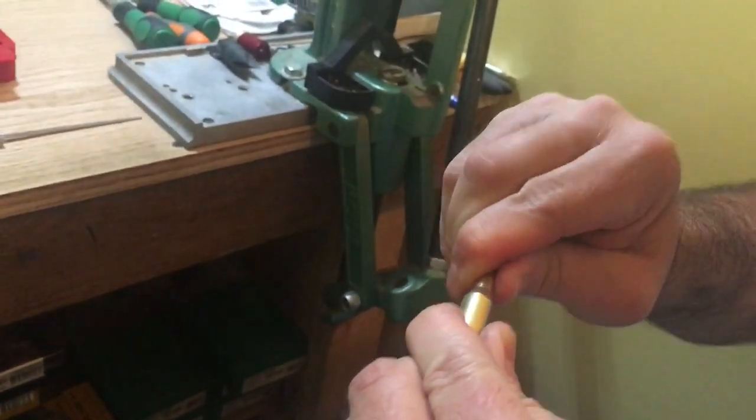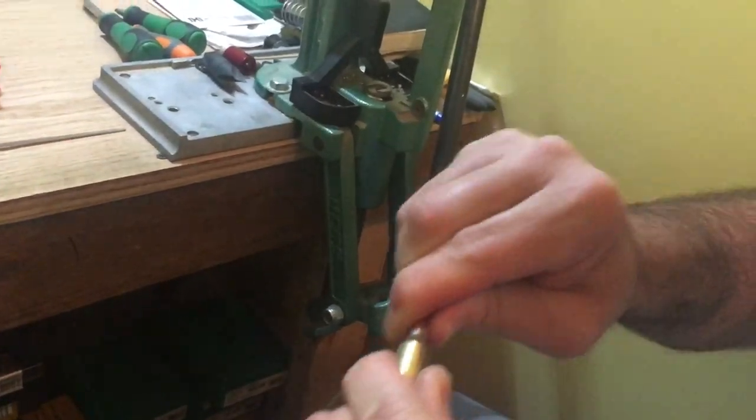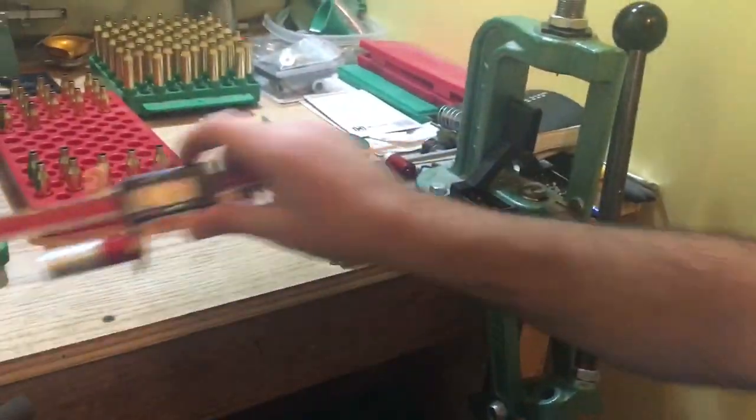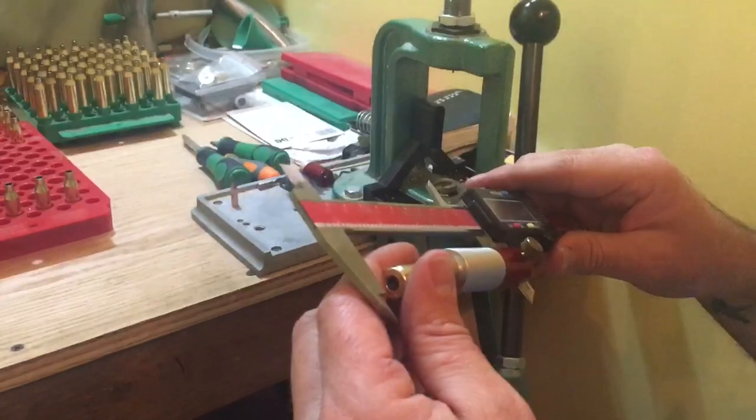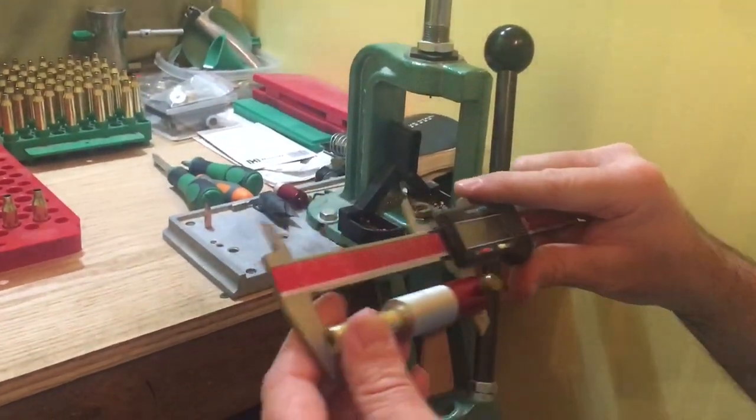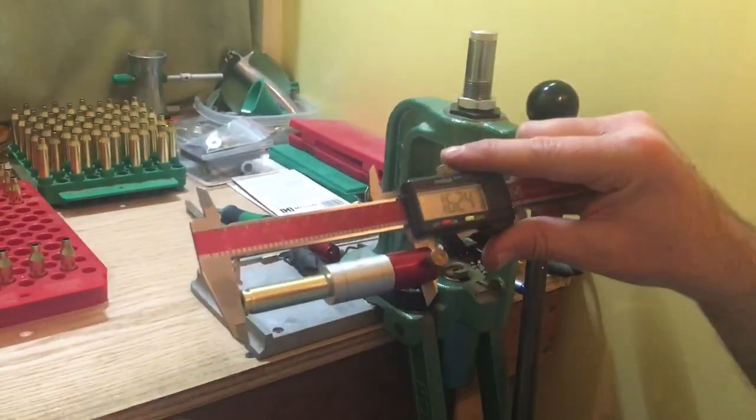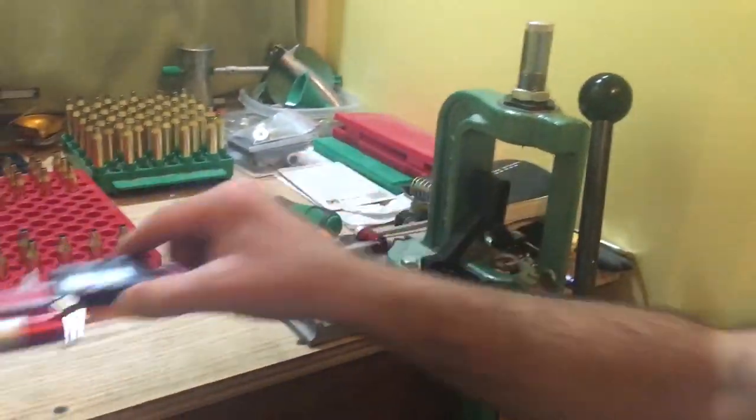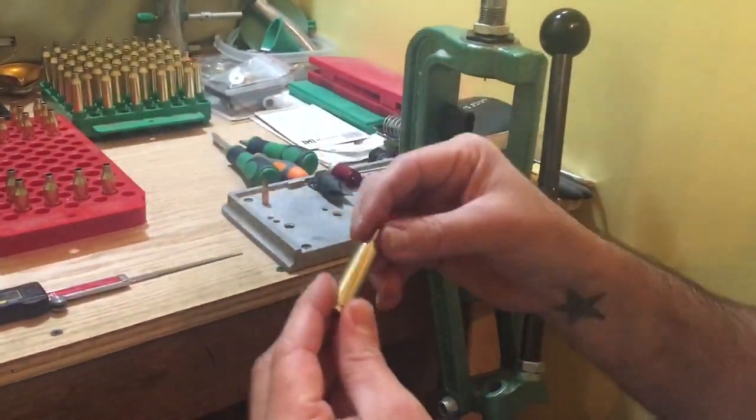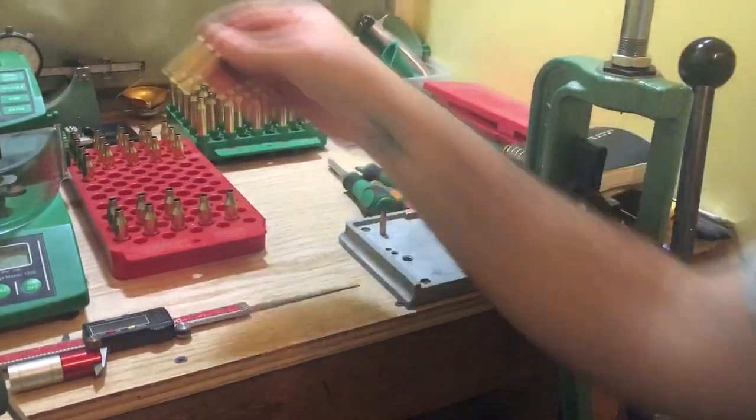So you want to just barely be able to push the bullet in. Now let's see what we got here. Again, 1.624. See, we're not touching anything on the shoulder. We are strictly sizing the neck only. So let's do a couple more here.